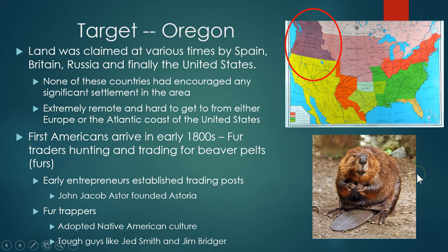A lot of these fur trappers adopted Native American culture. These were mountain men used to surviving on their own — tough guys like Jed Smith and Jim Bridger. To give you an idea of what these guys were like, there's a story about Jed Smith getting attacked by a grizzly bear. The bear had his whole head in its mouth and had torn off a big chunk of his scalp and one of his ears. He played dead to get free, and when his buddies came to help him, he ended up taking the needle and thread and stitching his own scalp back onto his skull. About two weeks later he was back leading parties through the mountains.